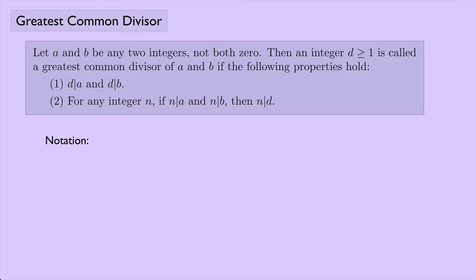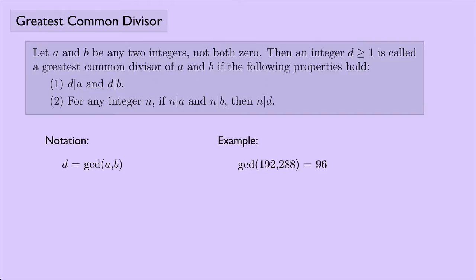Some notation here: we usually say that the greatest common divisor is denoted by the letter D, and we use the letters GCD to represent the greatest common divisor. In this case, this would be the greatest common divisor of A and B. For example, we saw before that the greatest common divisor of 192 and 288 was 96.